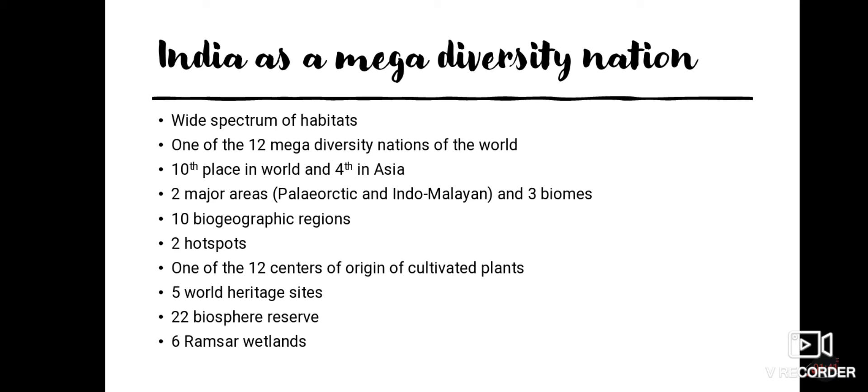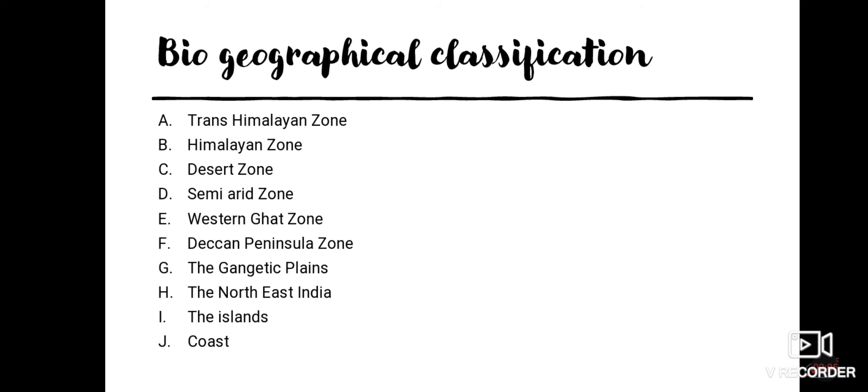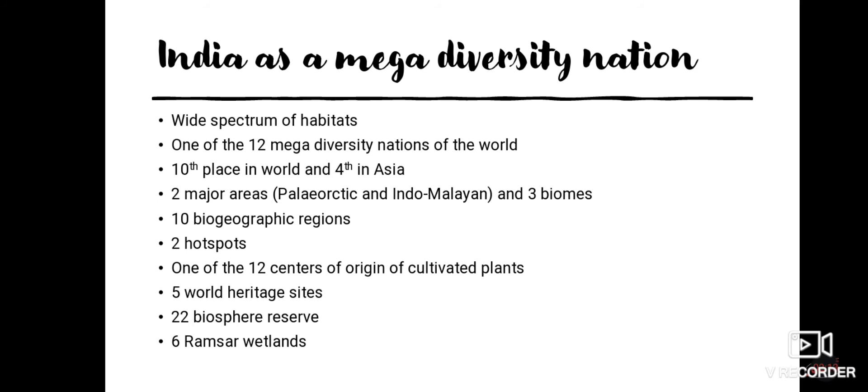Next, we move on to an important topic: India is called a megadiversity nation. Because India has a wide spectrum of habitats — different habitat cultures, from temperate zones to trans-Himalayan zones — plants and animals find better living places here. India is one of the 12 megadiversity nations of the world.